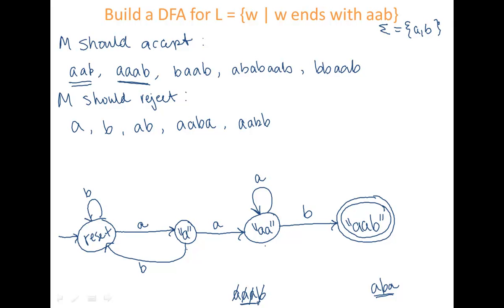So far I've got two transitions out of reset, two transitions out of my single A state, and two transitions out of my AA state. I don't have any transitions out of my AAB state yet, and I need to in order for this to be a DFA. So what do I do if I've seen AAB?